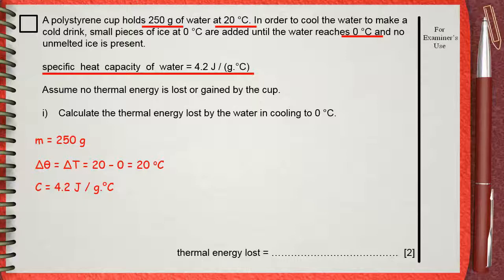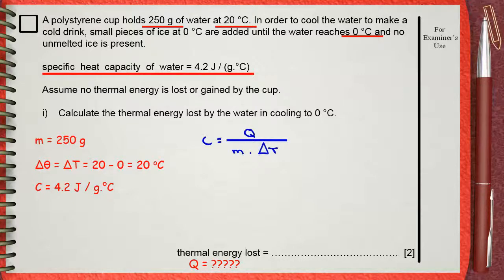What does the question want? It wants us to calculate the thermal energy lost. Thermal energy lost is Q — that is the most important thing, to know what you are calculating. We will use C equals Q divided by M times delta T.